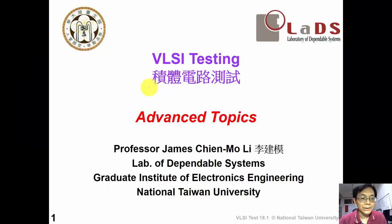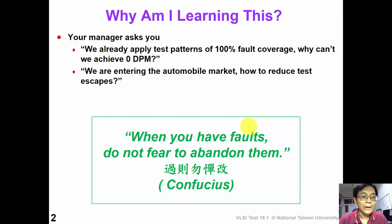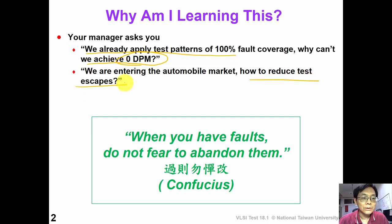Hello dear classmates, congratulations! You have already finished almost all the basic topics in VLSI testing. Today we are going to enter more advanced topics in VLSI testing. So why are we learning this chapter? Suppose we have already applied a very good test set of 100% fault coverage, but we still cannot detect all the defective ICs. So your manager asks you: why can we not achieve 0 DPM? How can we reduce all the test escapes? Those are very good questions to answer in this chapter.